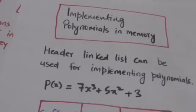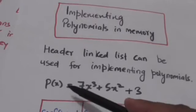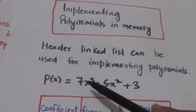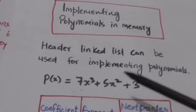Header linked list can be used for implementing polynomials. Suppose there is a polynomial in one variable px. Here px = 7x³ + 5x² + 3.